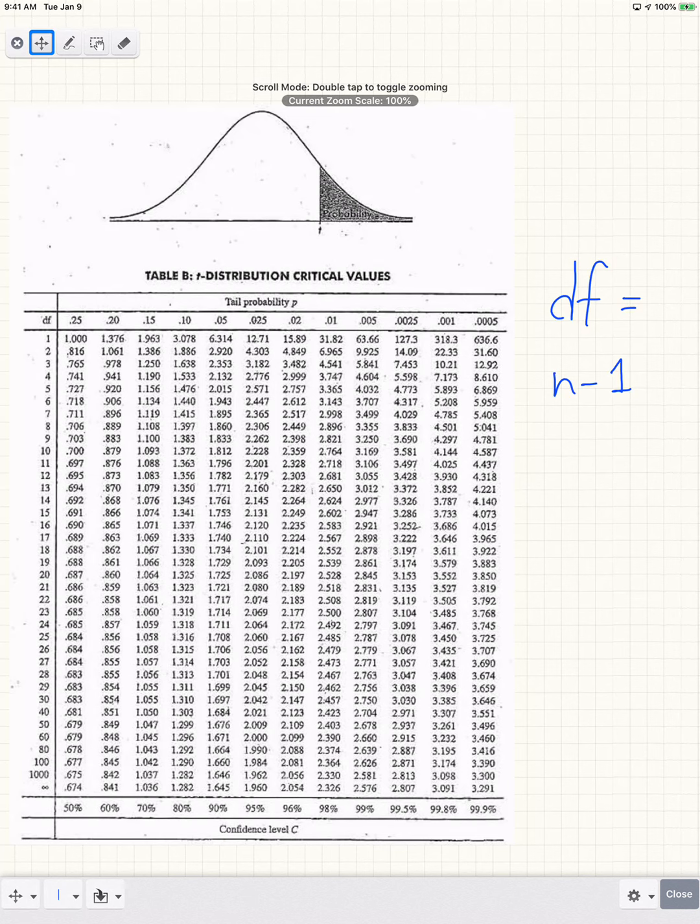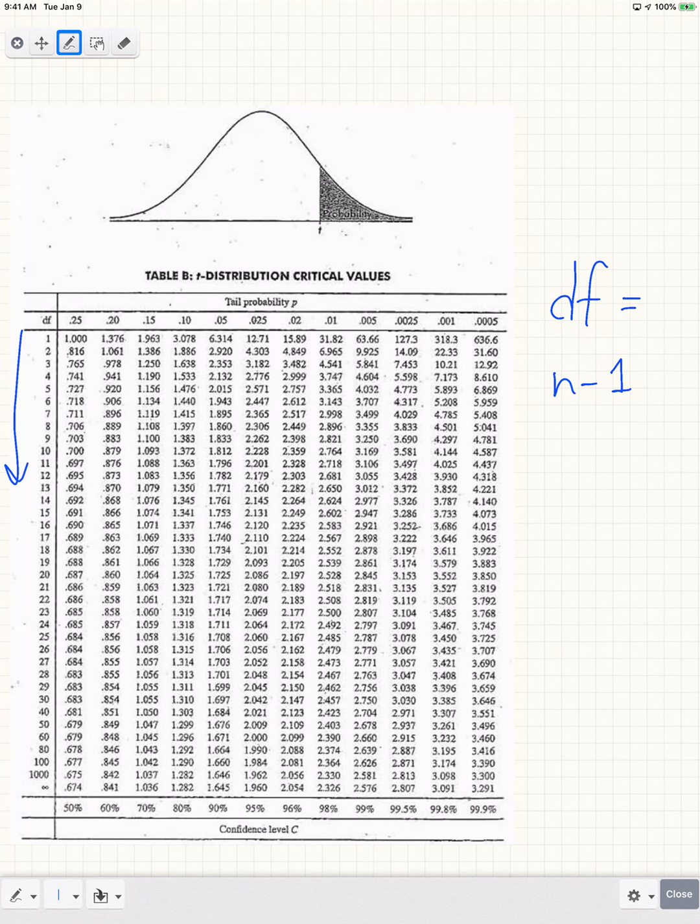So the way we do that is we start by looking at the table and see how it's organized, where on the column right here we have degrees of freedom going up and down. You can see the degrees of freedom get higher and higher as you go down the column.